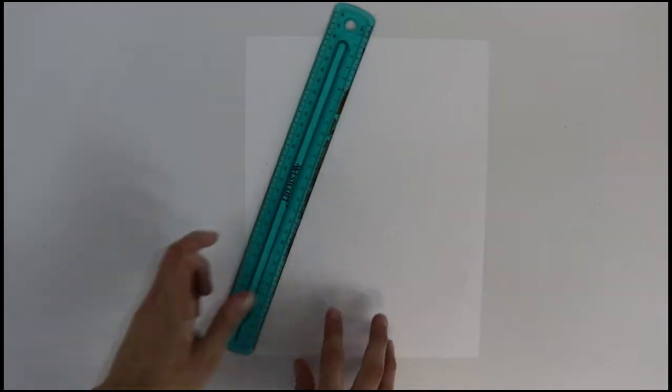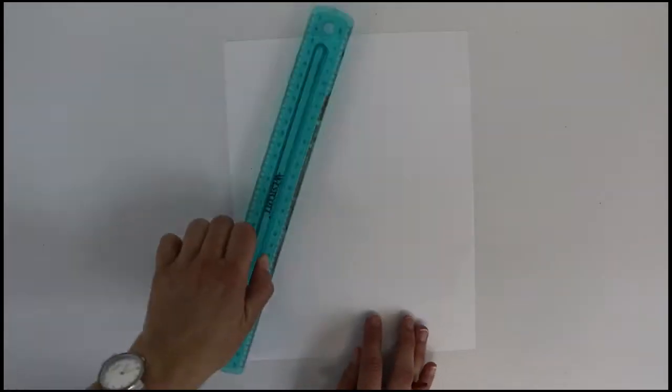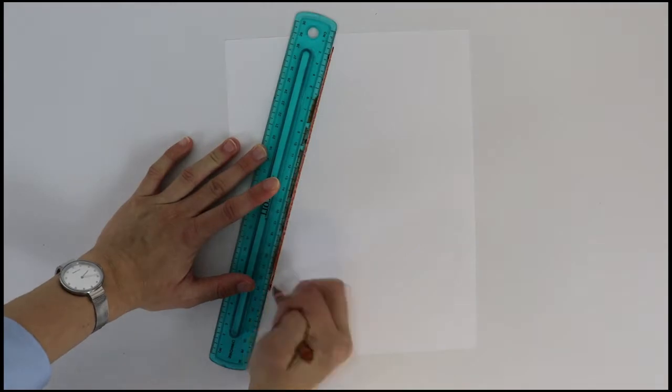Step one, take a piece of paper and draw a triangle with a rounded bottom. You can use the ruler to help you draw your straight lines.